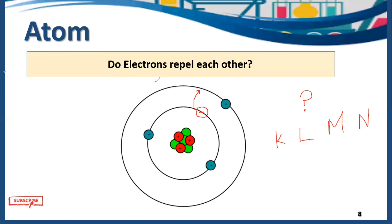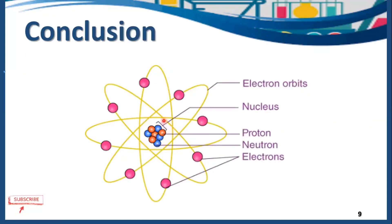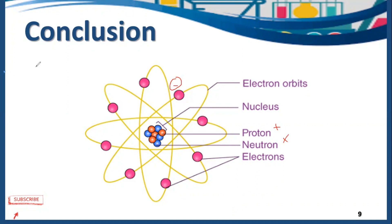To summarize: inside an atom there is a dense part called the nucleus, which contains protons and neutrons. Protons have a positive charge and neutrons have no charge. Electrons with a negative charge revolve around fixed orbitals called shells or energy levels. The atom as a whole is neutral because protons and electrons have equal and opposite charges that cancel each other. The repulsion between protons is managed by neutrons, and the repulsion between electrons is managed by the number of shells inside the atom.